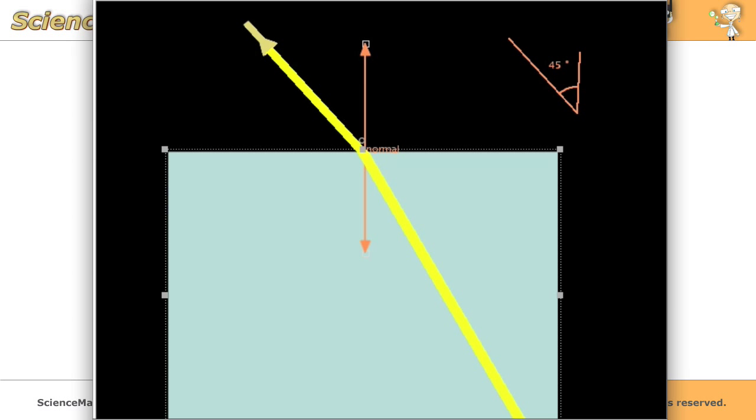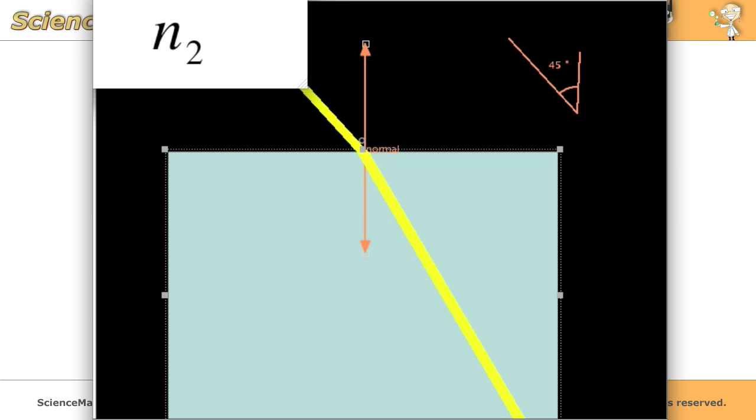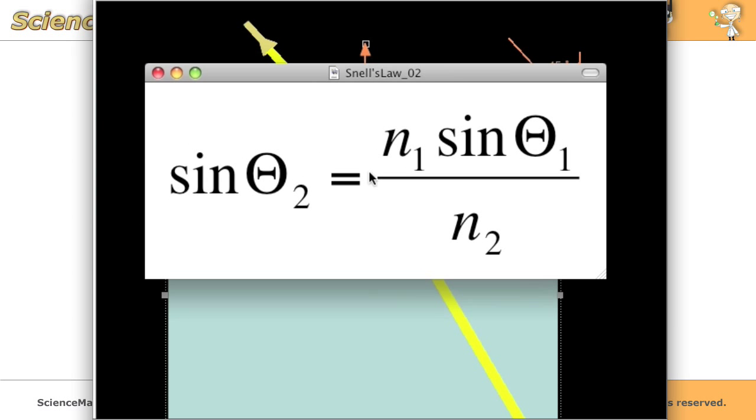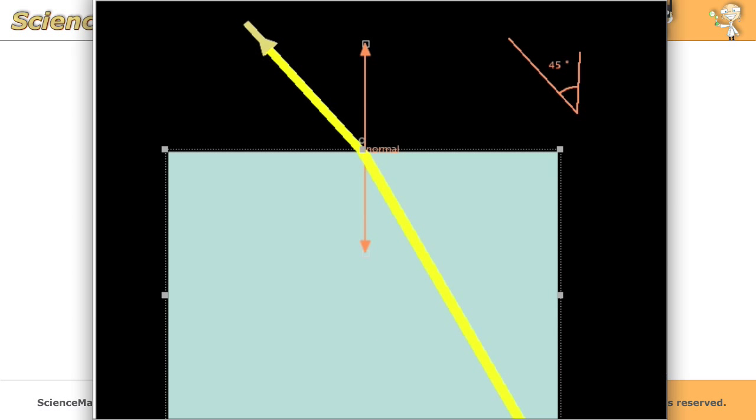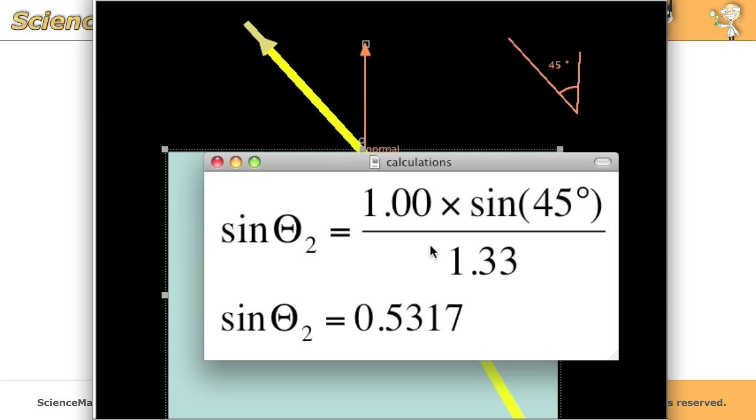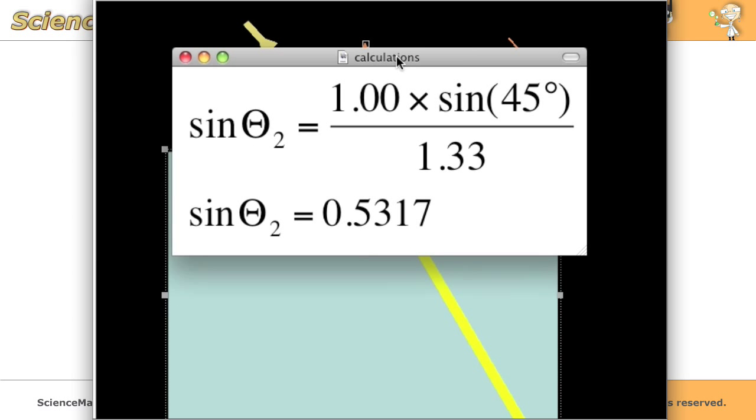So first we have to manipulate Snell's law in order to find the angle of refraction. So this is what the formula will look like. Now if we plug the numbers that we have into this formula, we will get this. 1 times sine 45 divided by 1.33, and that equals 0.5317.